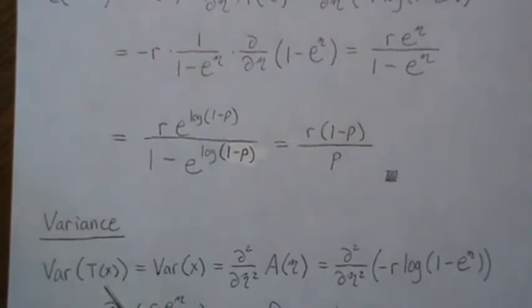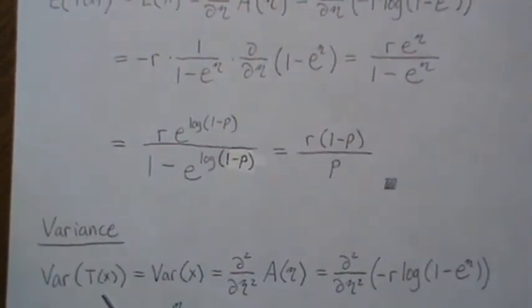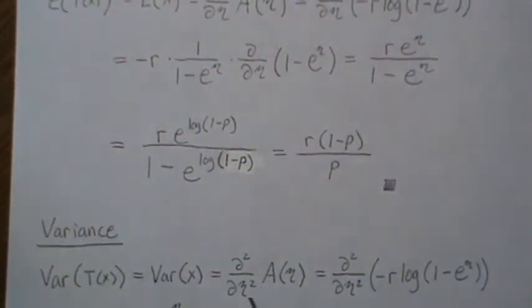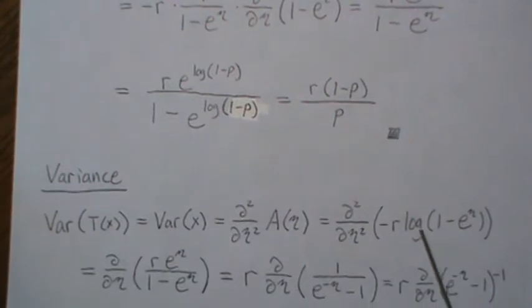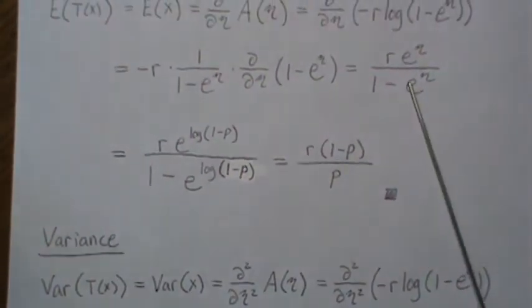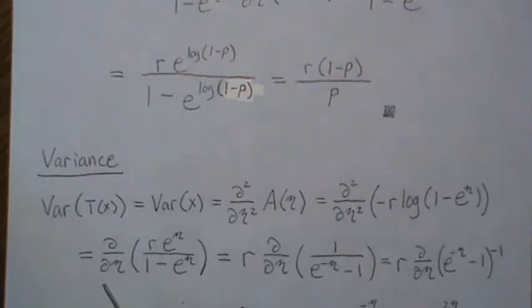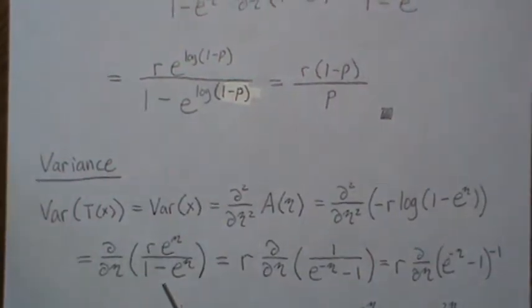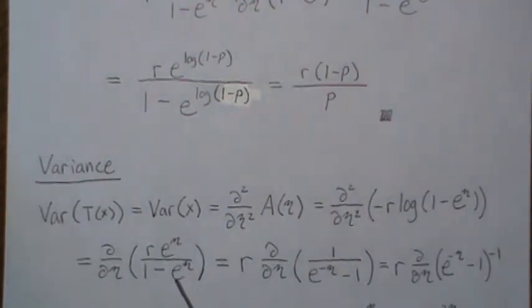Now let's look at the variance. The variance of our sufficient statistic says take the second derivative of eta with respect to our log partition. I said that backwards, the second derivative of log partition with respect to eta. And again, this log partition, and we already took the derivative once. So let's just put that in and take the derivative of that. And then I like to, and you can just take the derivative. Some of you are so good at derivatives, you just do it. It's the quotient, and boom, it comes out.